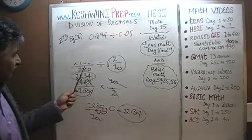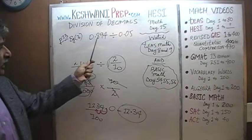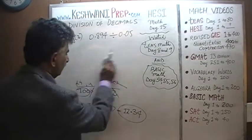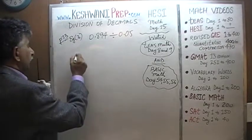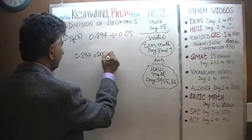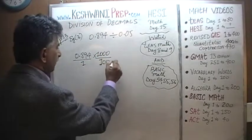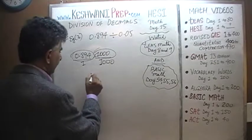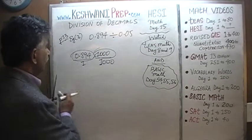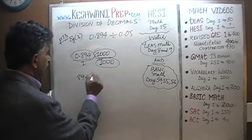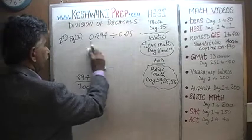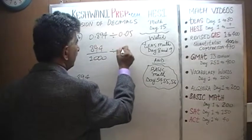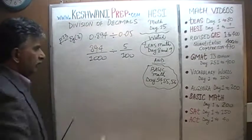Before we had 2.468 with three decimal places, and we multiplied top and bottom by 1,000 to make it a whole number. The same thing happens here. If you multiply 0.894 top and bottom by 1,000, it becomes 894 — so 0.894 over 1, multiplied by 1,000 over 1,000, is 894 over 1,000. And 0.04 can be written as 4 over 100, or as the speaker states, 5 over 100 — divided here.